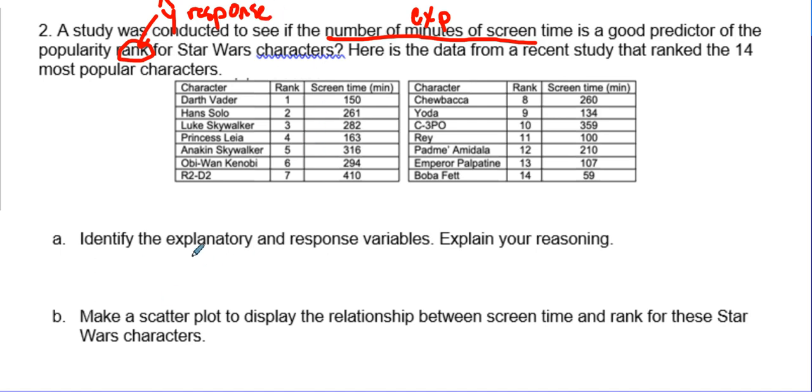So identify the explanatory variable. The explanatory, as I said before, is the number of minutes of screen time. And the response variable is, well, since this screen time is predicting the rank, the response would be the rank of popularity.